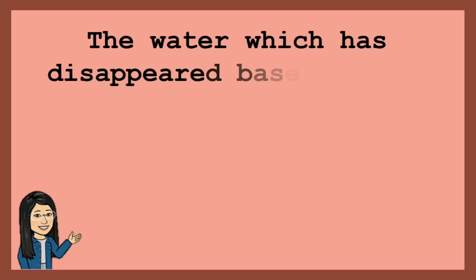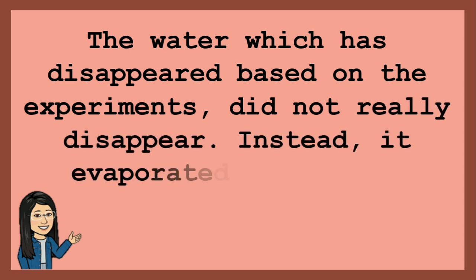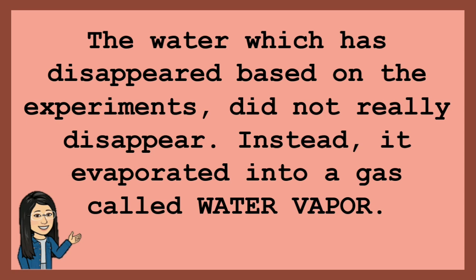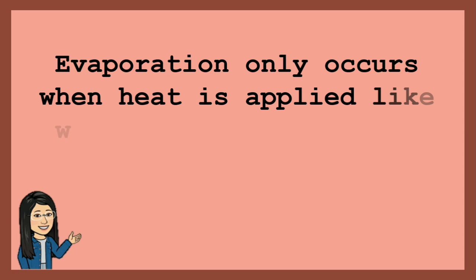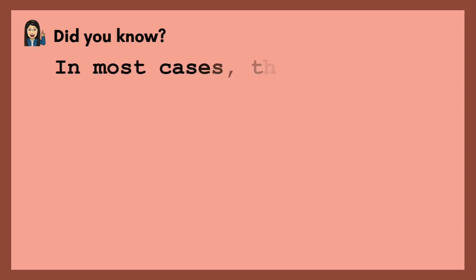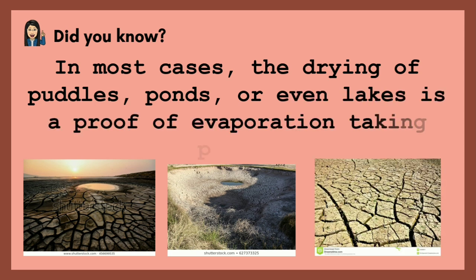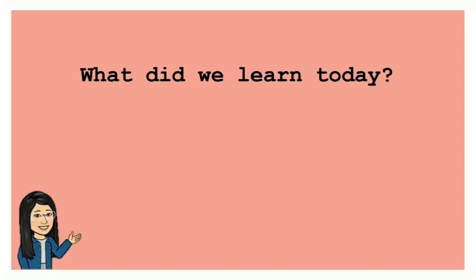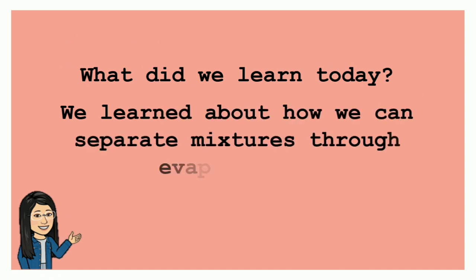The water which disappeared in the experiments did not really disappear — instead, it evaporated into a gas called water vapor. Evaporation only occurs when heat is applied, like when we dry our clothes under the heat of the sun. Did you know that in most cases, the drying of puddles, ponds, or even lakes is proof of evaporation taking place?